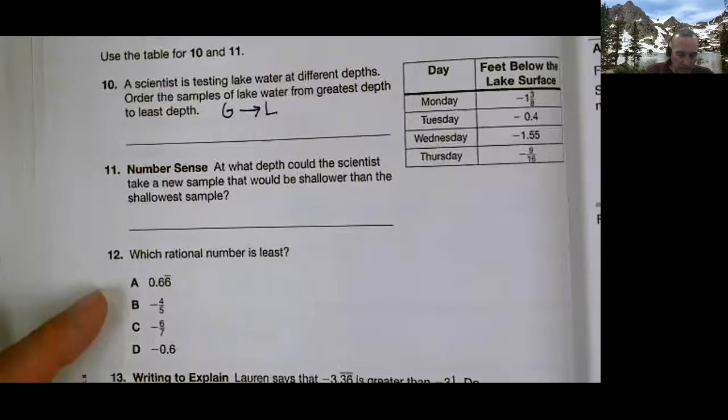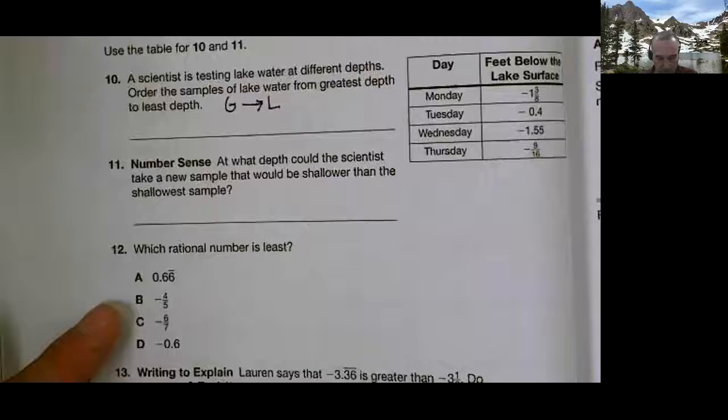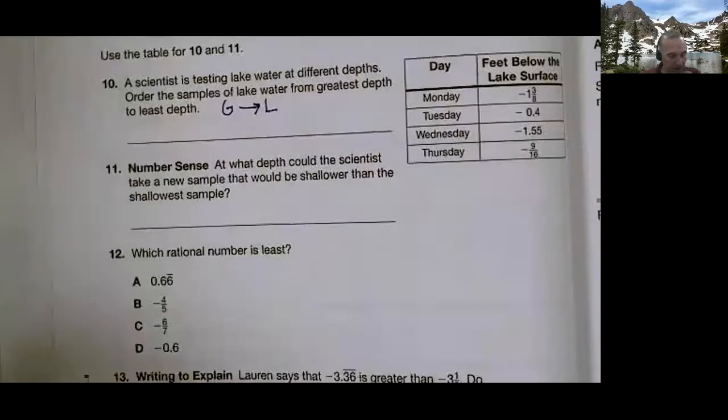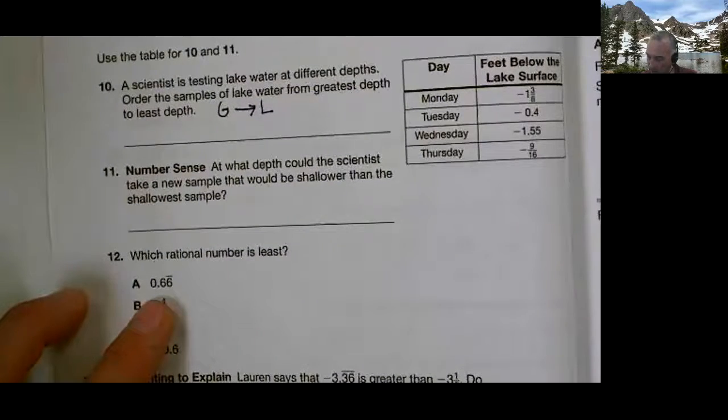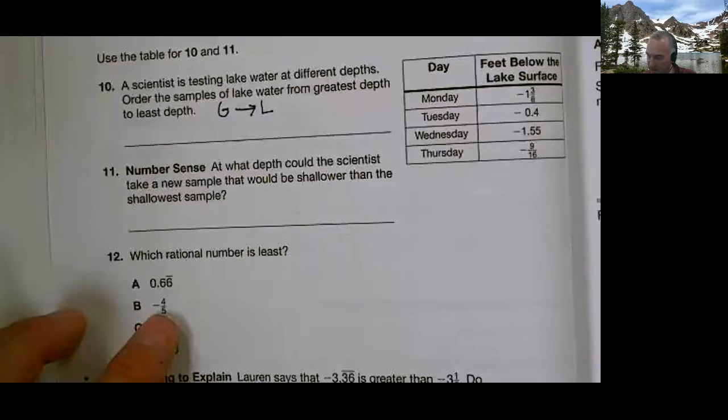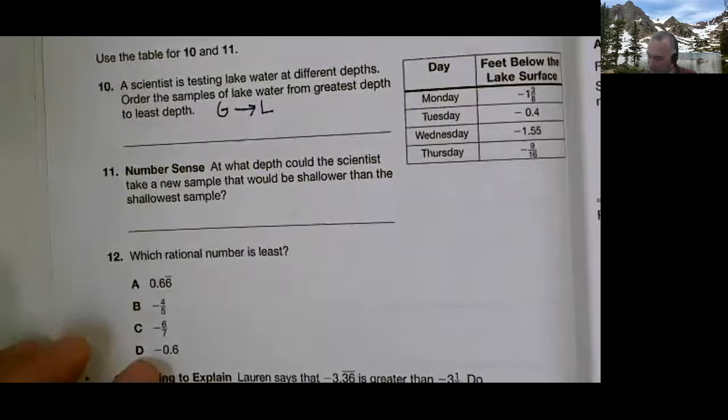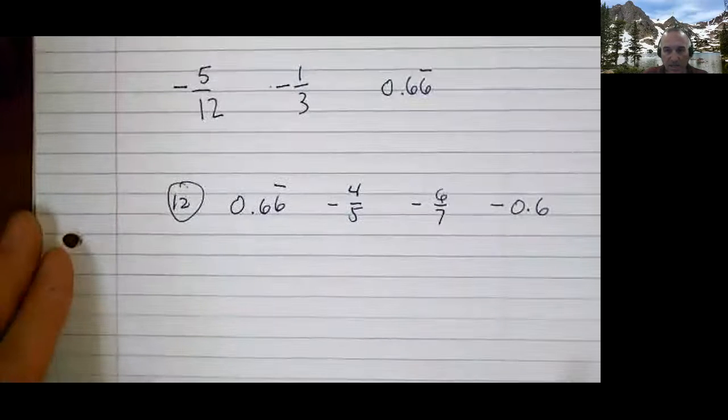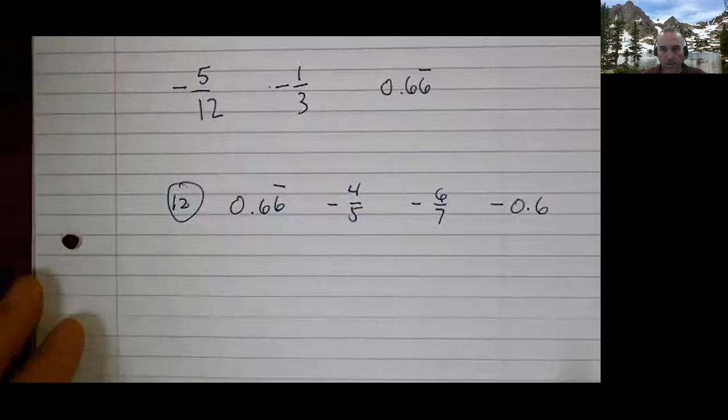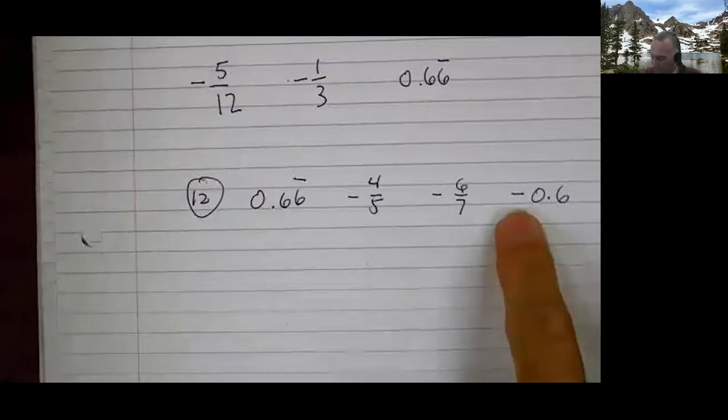Which rational number is least? Let's do 12 together. So you're only left with about six problems on this page. I have 0.66, negative four-fifths, negative six-sevenths, negative six-tenths. I'm going to slide my journal in here. Which one is least? There they are. What am I going to do?